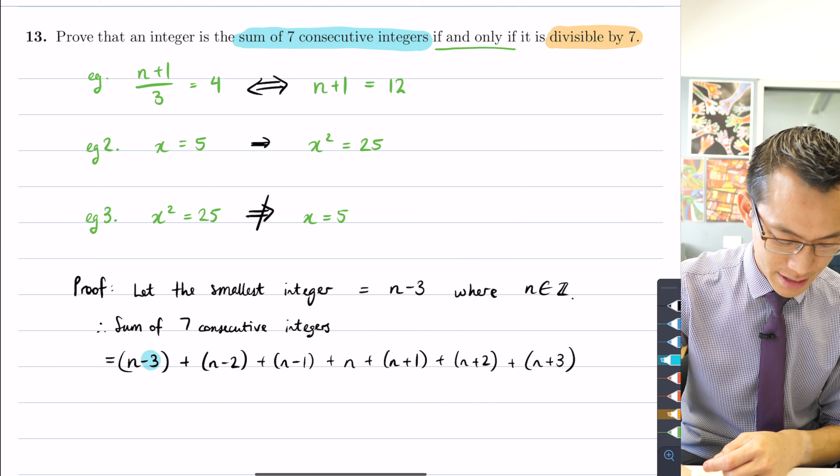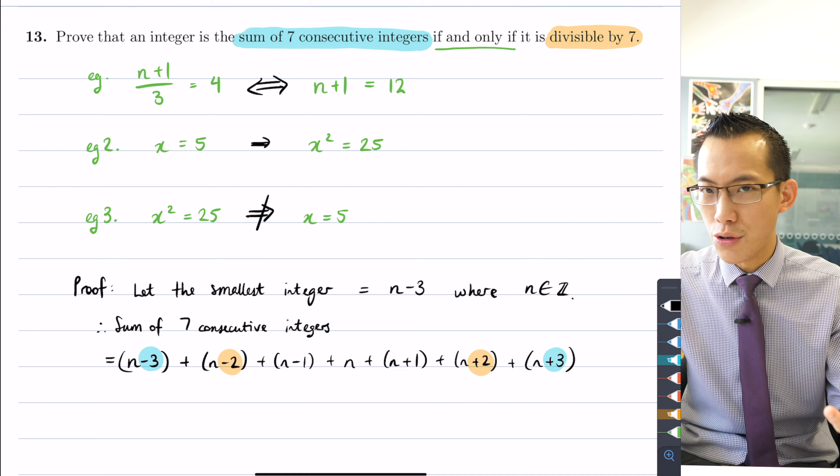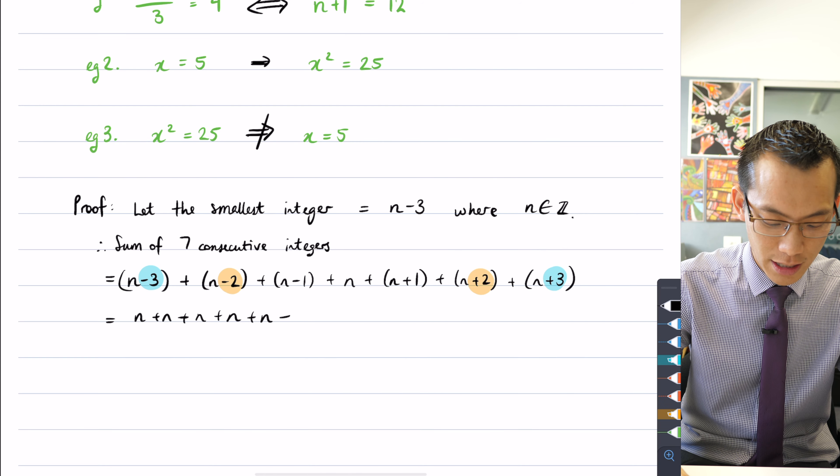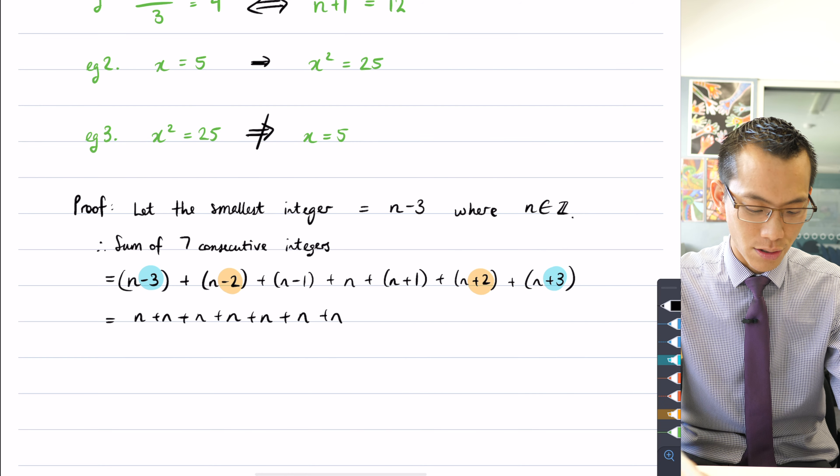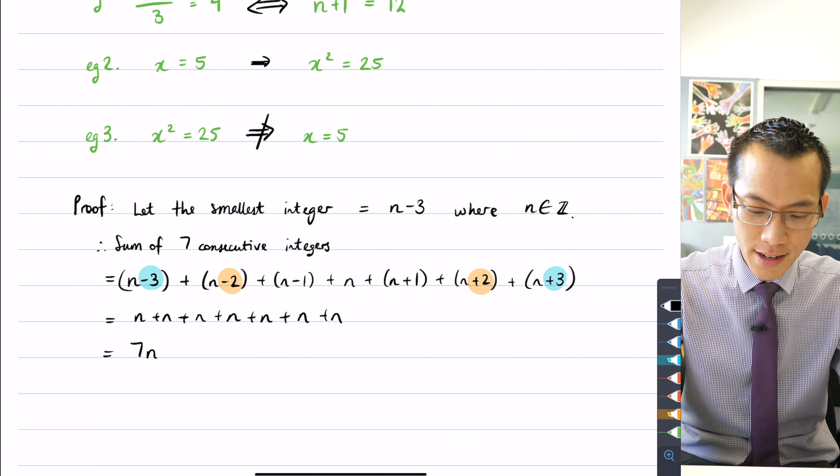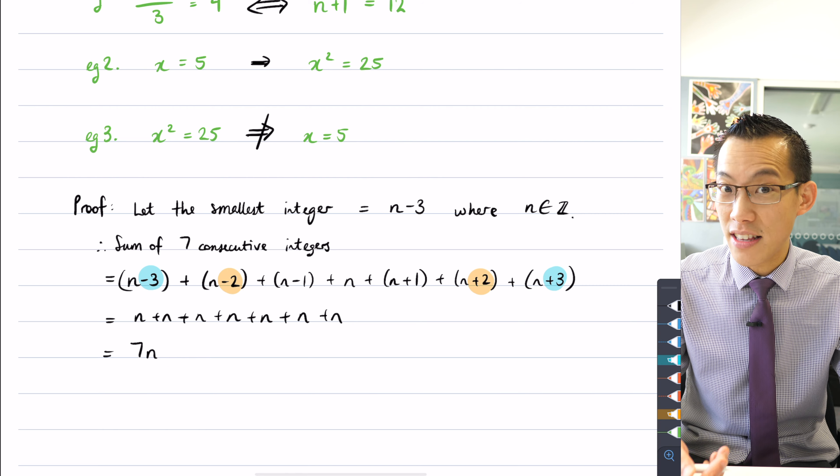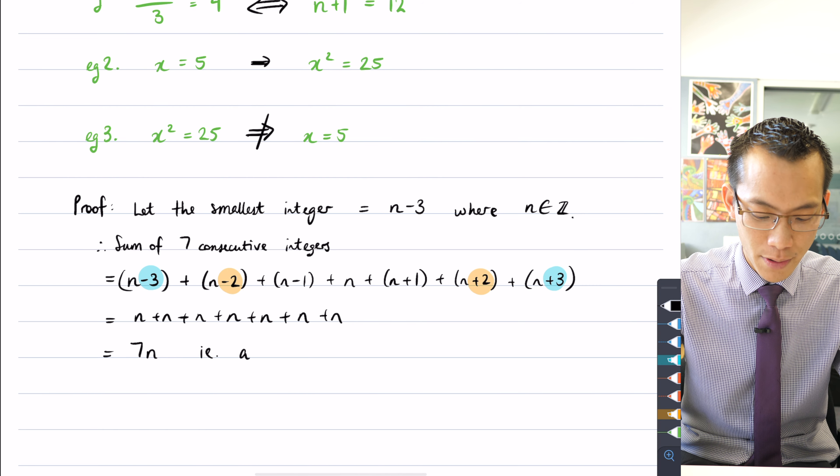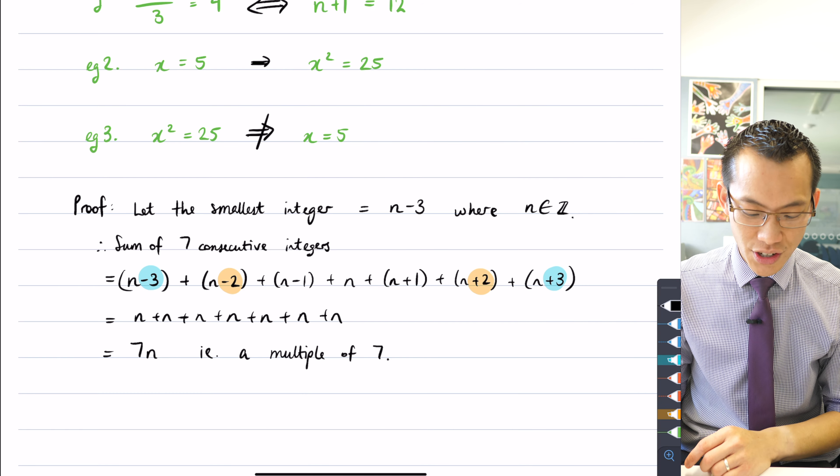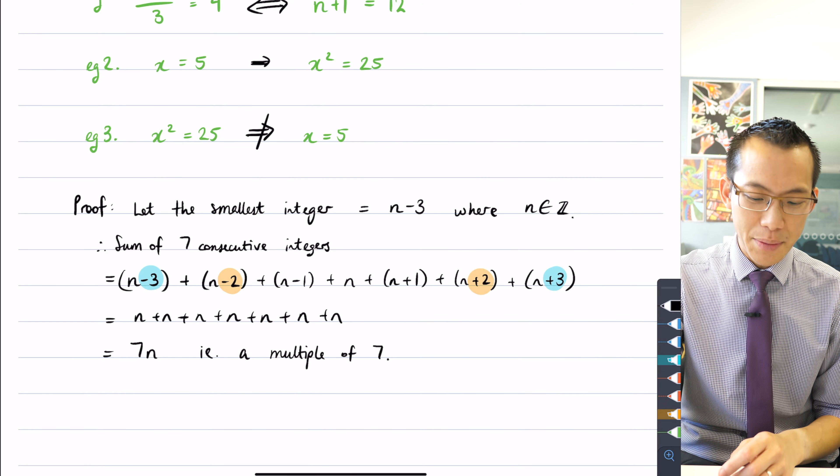So now you can see why I hope I started with n-3, because I want to get some canceling happening. This -3 is going to cancel with this +3, this -2 is going to cancel with this +2, you get the idea. So what am I getting? It's just going to be n+n+n. I've got seven of these things because this is seven consecutive integers, so that's clearly equal to 7n. But I said n is an integer, so therefore 7n must be seven times an integer—that's a multiple of seven, i.e., a multiple of seven. Therefore the sum of seven consecutive integers must be divisible by seven because all multiples of seven by definition are.